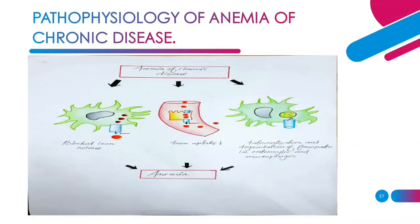Here is a picture of the pathophysiology of anemia in case of chronic disease. In anemia of chronic disease, there is a decrease in iron uptake and blockage of iron release. There is internalization and degradation of ferroportin in enterocytes and macrophages, ultimately leading to anemia. So in chronic anemic conditions there is decreased uptake and release of iron in blood.